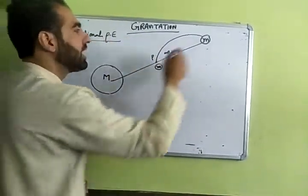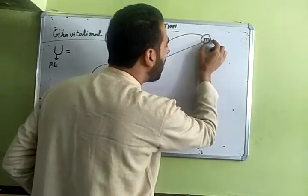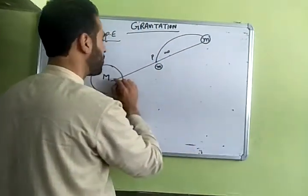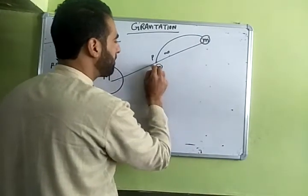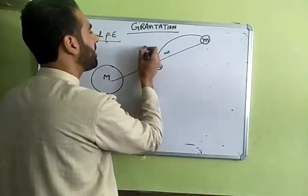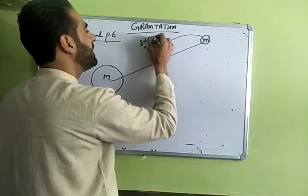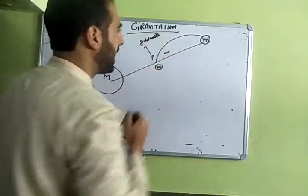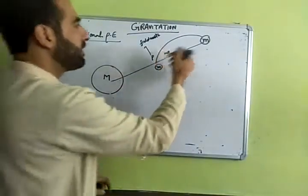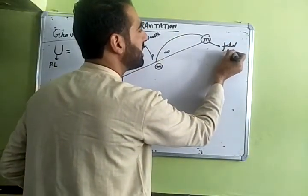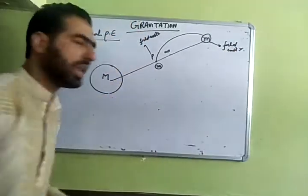Now I bring this body from infinity closer to this object, to a certain point P. This point P is not infinity; it is the point where the field exists. Infinity is the point where the field does not exist.